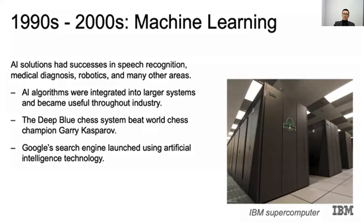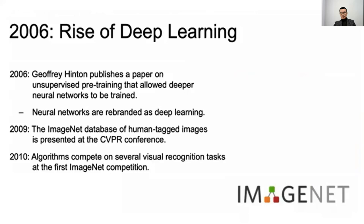In the 1990s and 2000s, machine learning started to develop. AI solutions had success in speech recognition, medical diagnosis, robotics, and many other areas. AI algorithms were integrated into large systems and became useful across industries. In 2003, Deep Blue chess system beat world chess champion Garry Kasparov. Google's search engine launched using Artificial Intelligence technology.